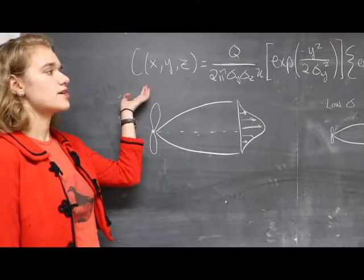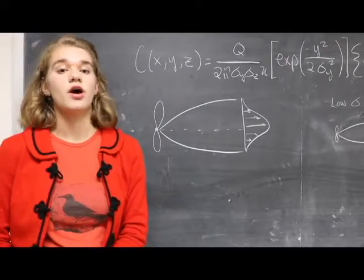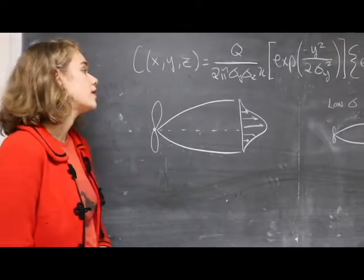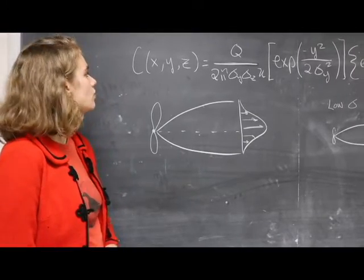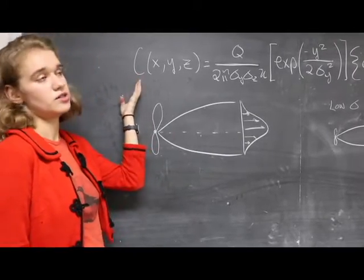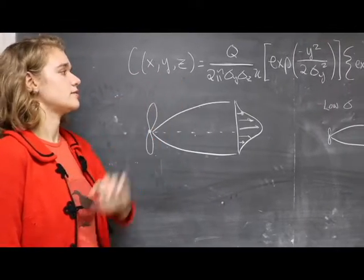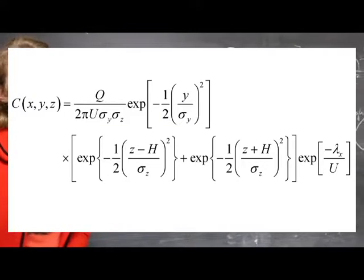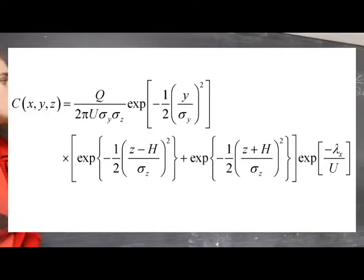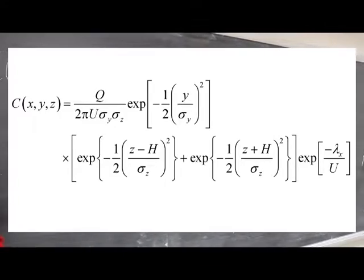This is the Gaussian plume model, which is the basis for our model. It takes inputs like wind speed and temperature and outputs a concentration at points x, y, and z. There are more complicated models out there, but we went for simpler — yes, this is simpler.